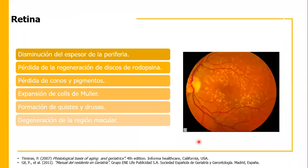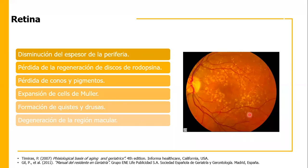En la retina per se, va a haber disminución en el espesor de la periferia y pérdida de la regeneración de discos de rodopsina. Los discos de rodopsina los emplean los bastones, que tienen la función de visión en blanco y negro. También va a haber pérdida de los conos, que tienen a su cargo la visión a color. Habrá expansión de las células de Müller en la capa limitante externa, y formación de quistes y drusas, todo asociado a la degeneración macular relacionada con la edad, que veremos específicamente más adelante.